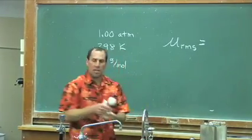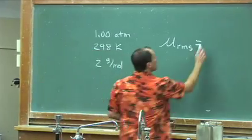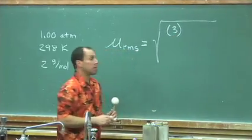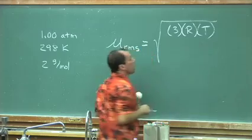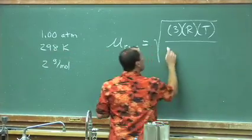They are zipping by our face and hitting us and bouncing off the walls very fast. It's equal to the square root of the number three times R times the temperature. So on the top, I've written 3RT, quite straightforward, over the molar mass.